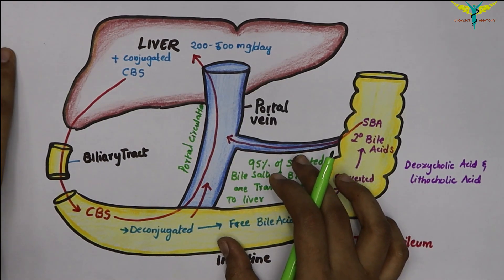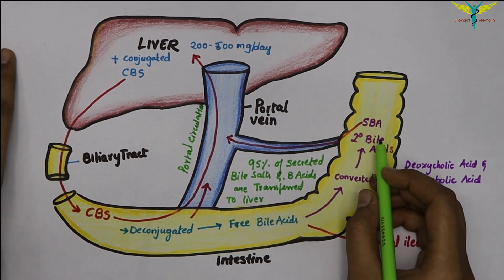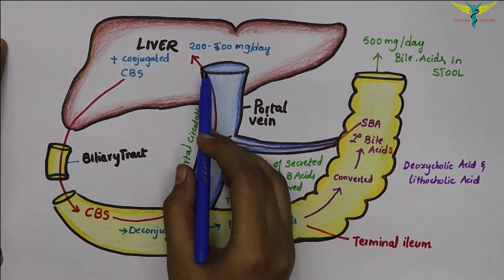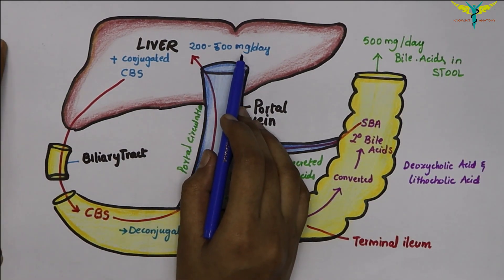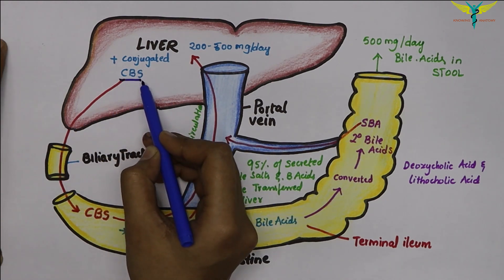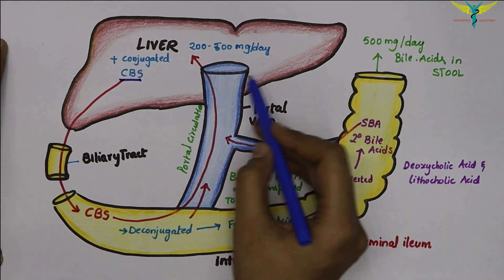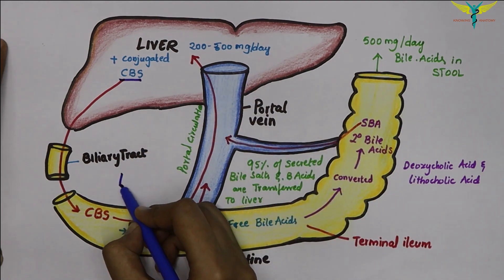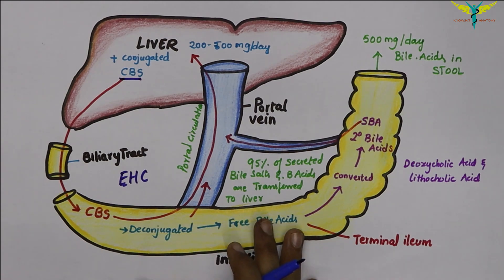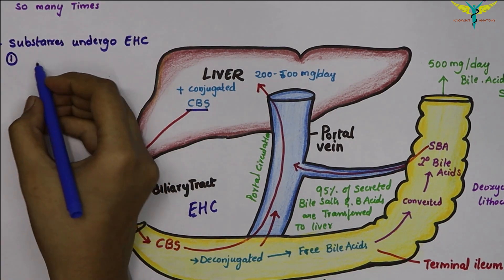Only 200 to 500 mg of the bile acids are excreted in the stool. From the liver, they are again excreted through the biliary tract as conjugated bile salts and enter the intestine — this forms a loop pathway for the enterohepatic circulation.